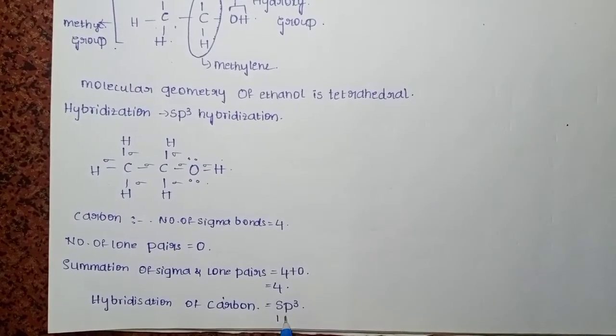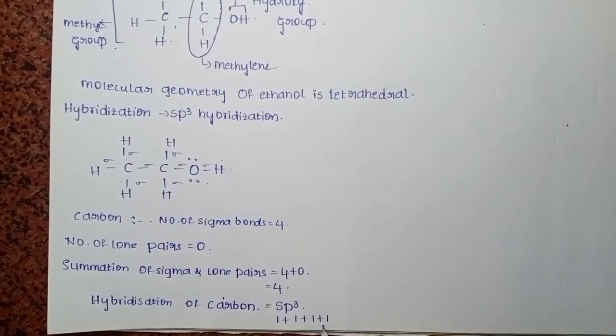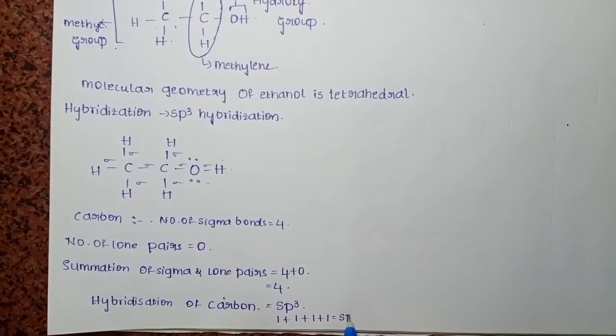S consists of one hybrid orbital and P consists of three hybrid orbitals, so from this we can write that SP3 is the hybridization.